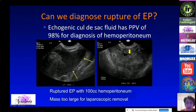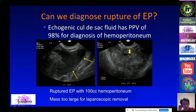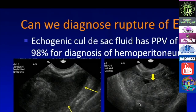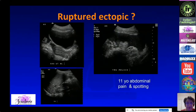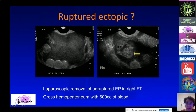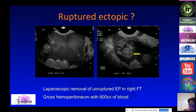Here is an example of a large hematocele with a large amount of blood in the pelvis from a ruptured ectopic pregnancy — the mass was too large for laparoscopy. In another case, a young patient had a large amount of hemoperitoneum and an apparent ruptured ectopic, but at surgery it turned out to be an unruptured ectopic with bleeding from the fimbriated end.